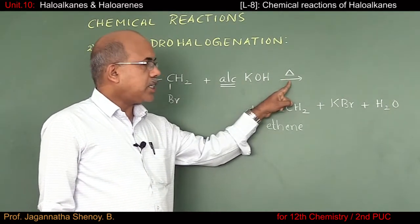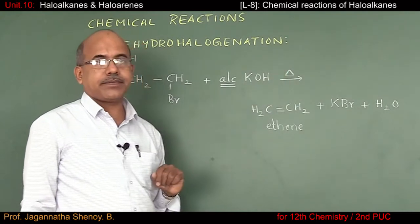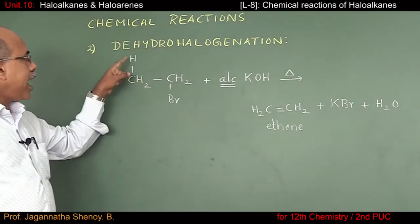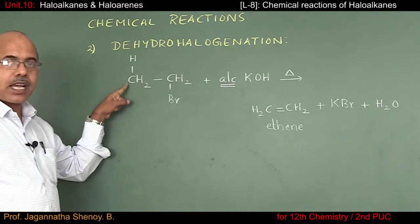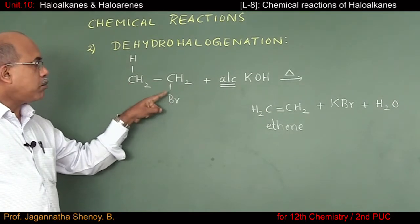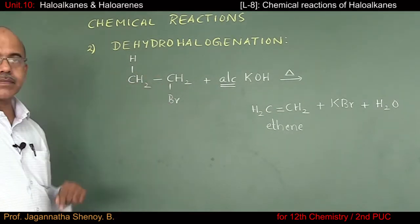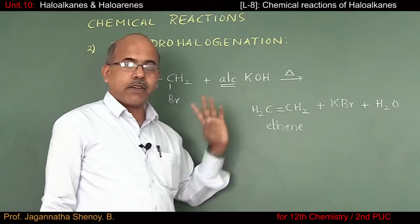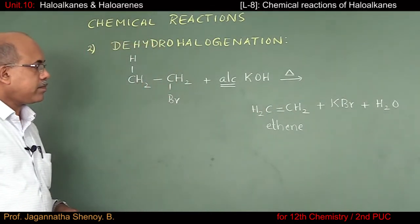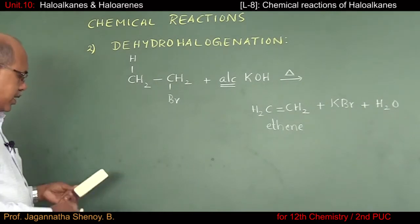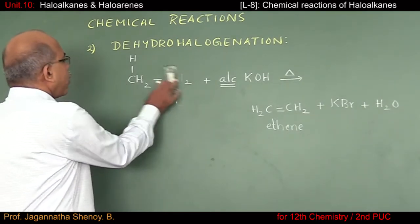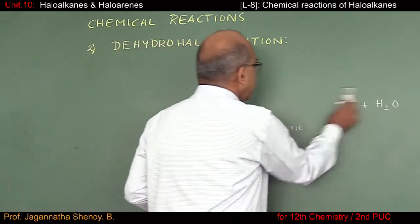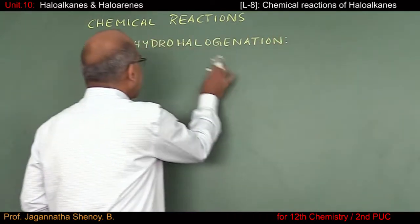The reaction condition is that one has to heat it. How does the reaction take place? Hydrogen gets removed from the beta carbon atom, and halogen is removed from the alpha carbon atom. The product will be an alkene. Let us consider dehydrohalogenation on 2-bromopentane.